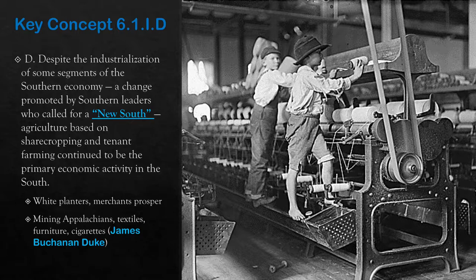One of the big industrialists of the time is a guy named James Buchanan Duke. If you know that name 'Duke' — like we mentioned in the last video, Cornelius Vanderbilt gets a school named after him in Tennessee — well, Duke gets a school named after him in North Carolina. I think you might have heard of this school. That brings us to the end of this particular lesson.